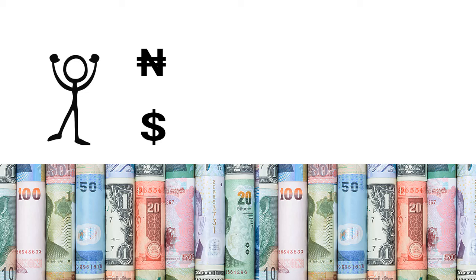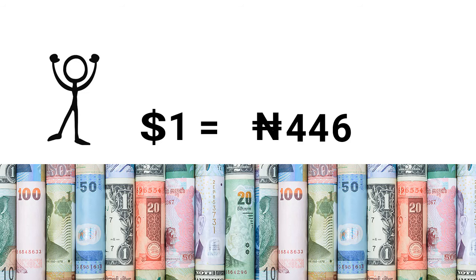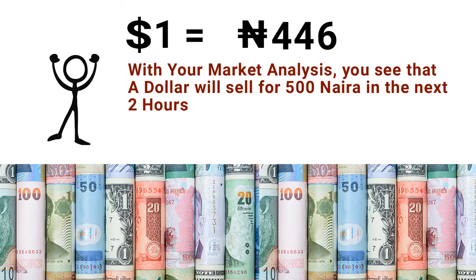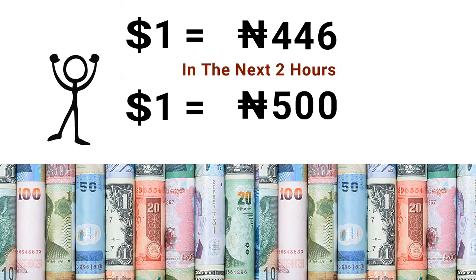Let's assume that right now a dollar costs 446 naira — that is, before you can buy a dollar you need 446 naira. Now you have done your market analysis, your technical analysis, or you checked the economic data that was released. Through your analysis you found out that in the next two hours one dollar will cost 500 naira. So right now a dollar costs 446 naira, but with your analysis you predict that in the next two hours the dollar will cost 500 naira.